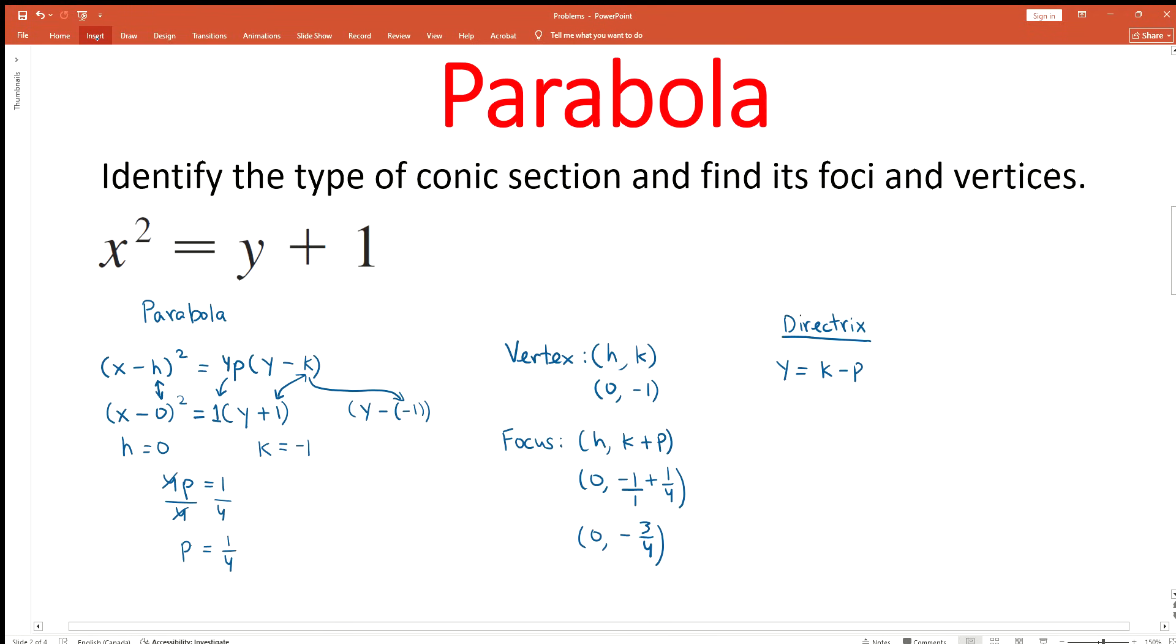We can sub in the values. k = -1, p = 1/4. We can combine these numbers by finding a common denominator. The denominator of -1 is 1. The common denominator is 4. So we get -4/4 - 1/4, which is equal to -5/4. This is the equation of the directrix of this parabola.